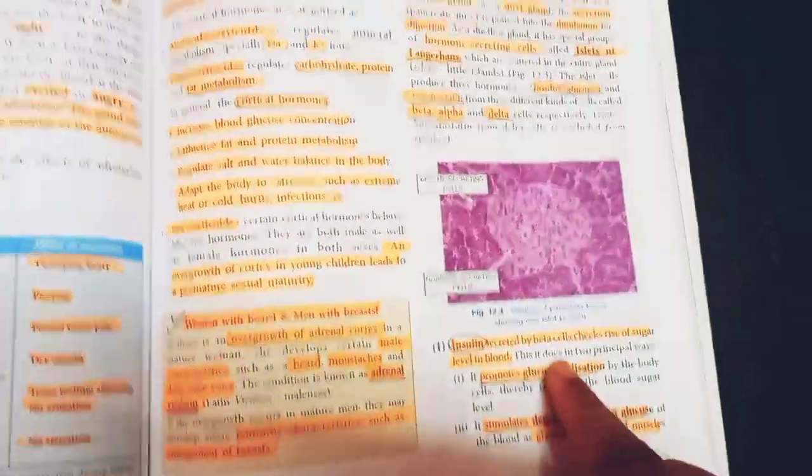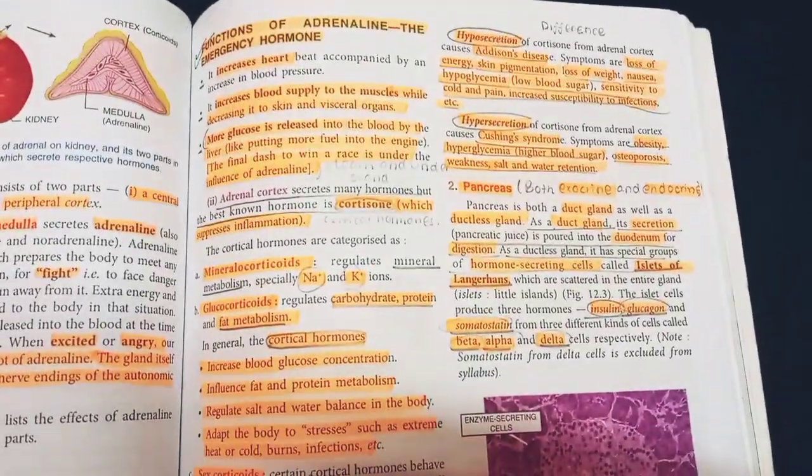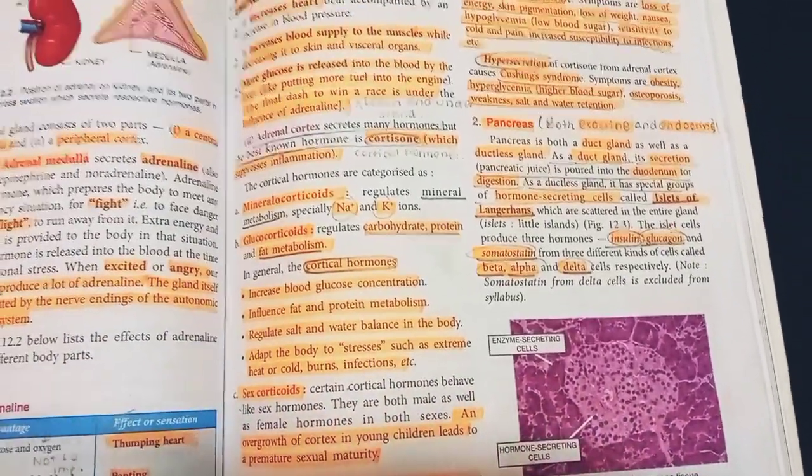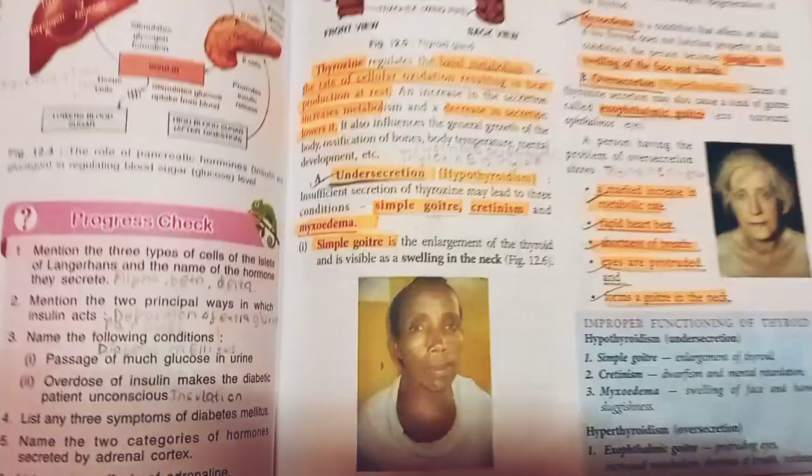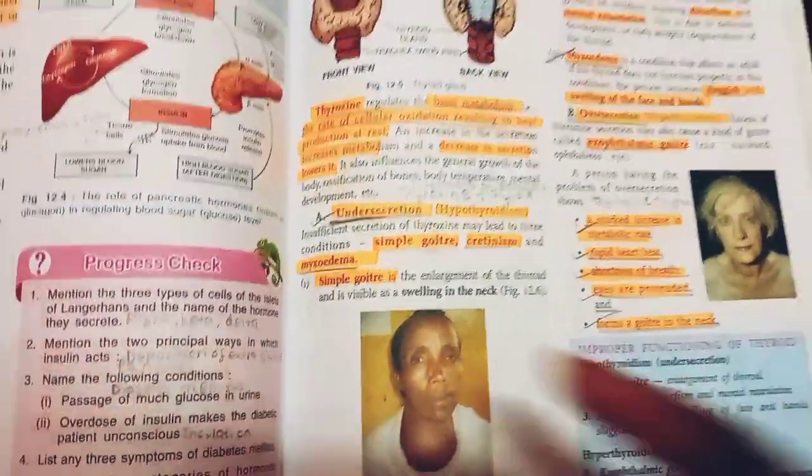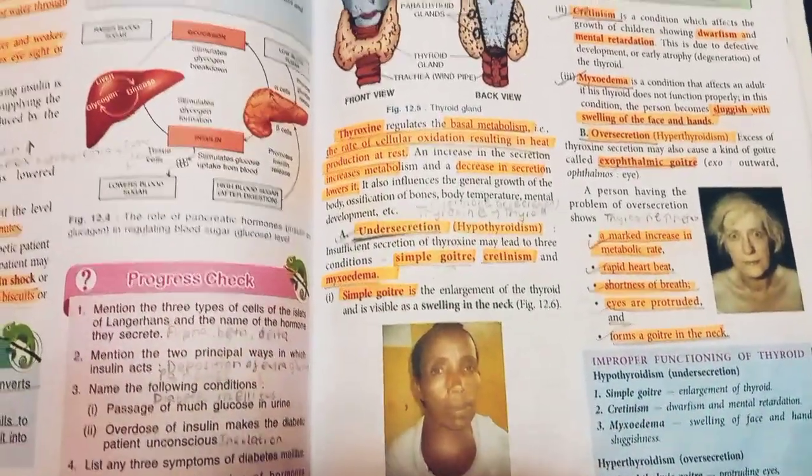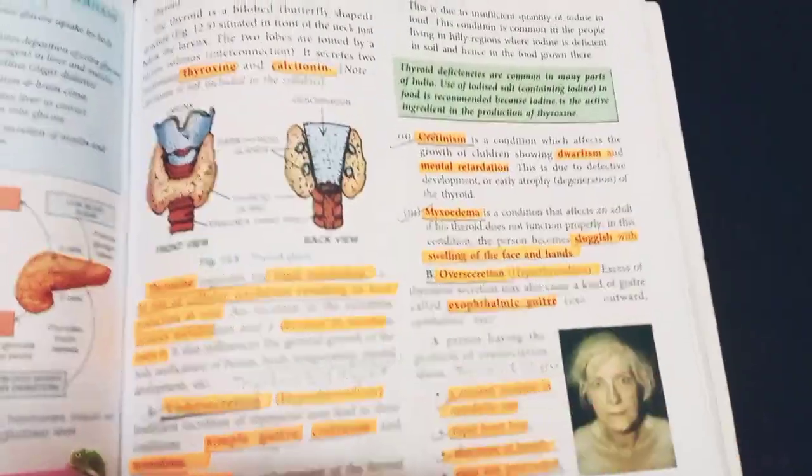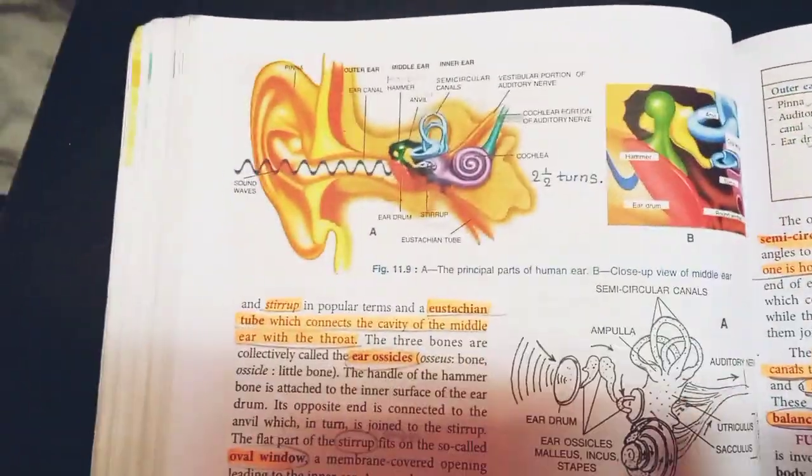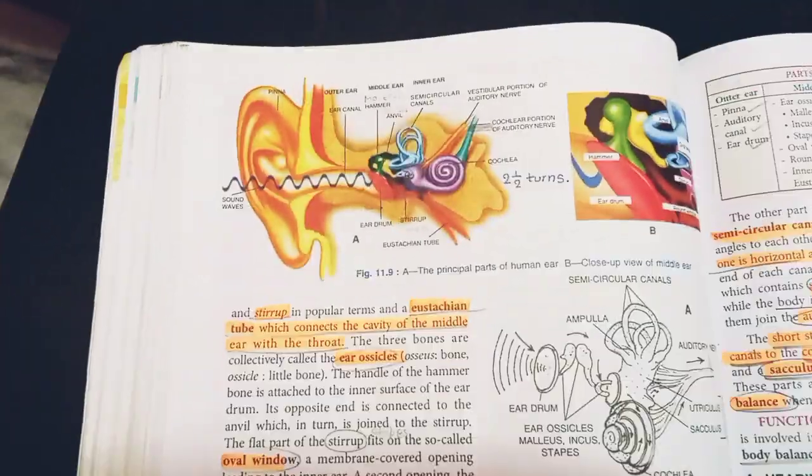Right, for example pancreas, it is both exocrine and endocrine. They may ask you which is a duct as well as a ductless gland. What happens on under secretion of thyroxine? Then the answers are simple: goiter, cretinism and myxedema. Over secretion causes exophthalmic goiter. Please make sure that you learn the diagrams and label it properly.